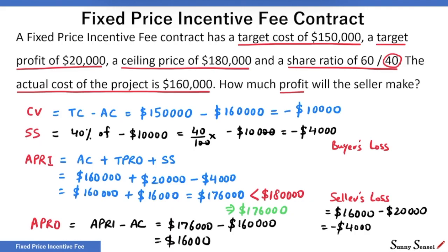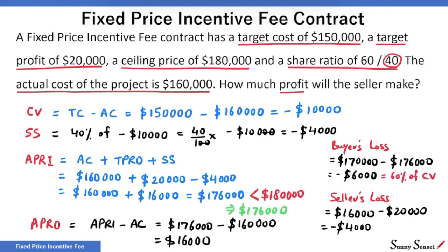The sum of target cost and target profit is the target price: $150,000 plus $20,000 is $170,000. But the buyer has to pay $176,000 — $6,000 higher, a loss to the buyer. Buyer lost $6,000 and the seller lost $4,000. Together they lost $10,000, a value equal to the cost variance. 60% of the loss is on the buyer and 40% is on the seller, which matches with the share ratio of 60 to 40.